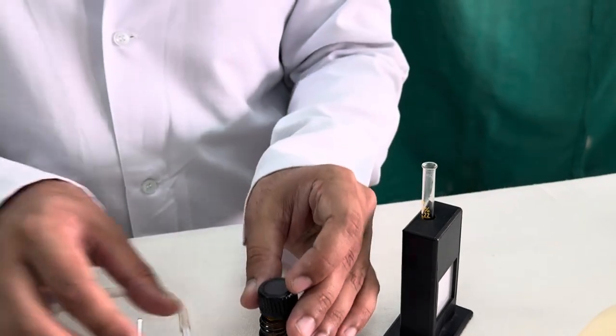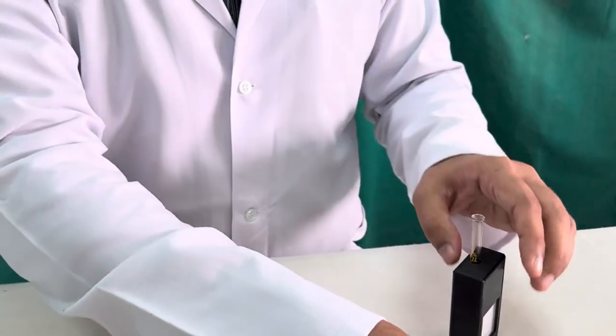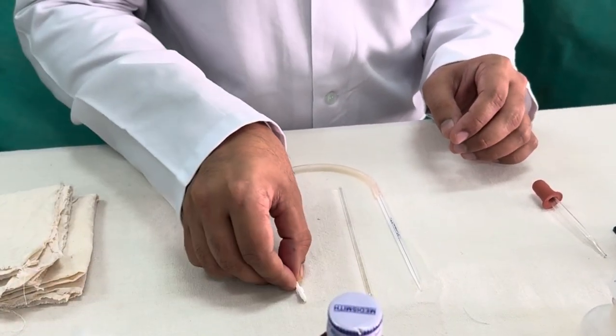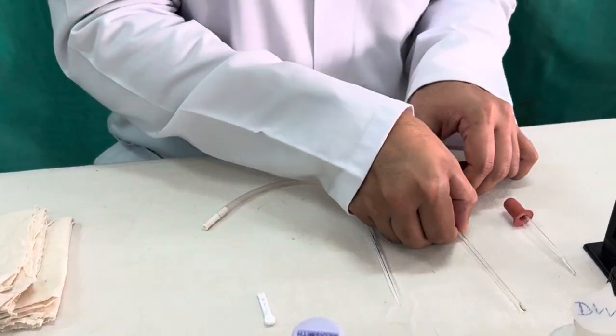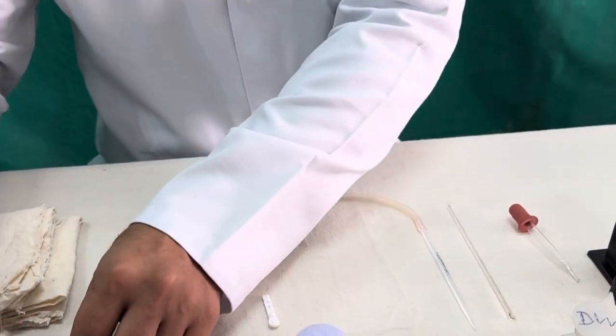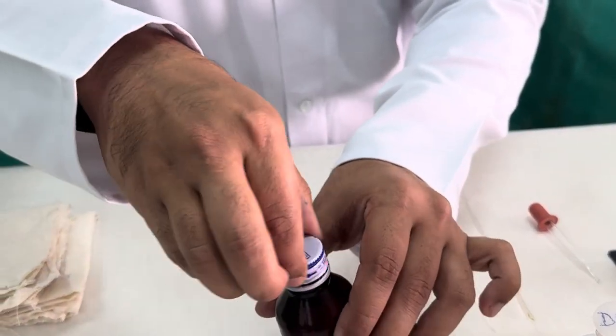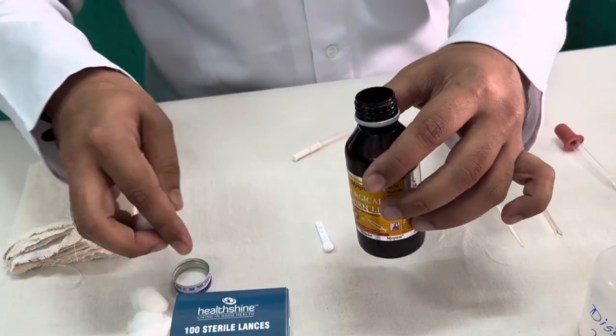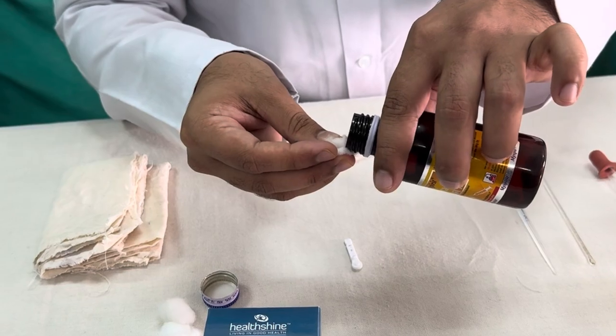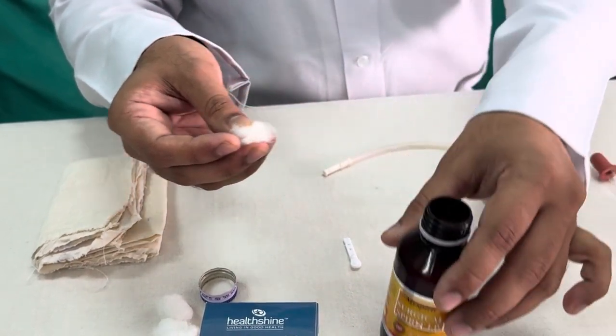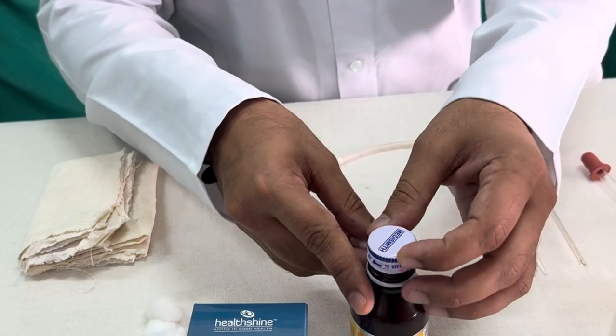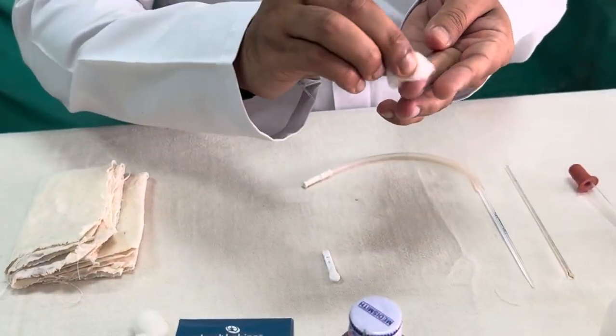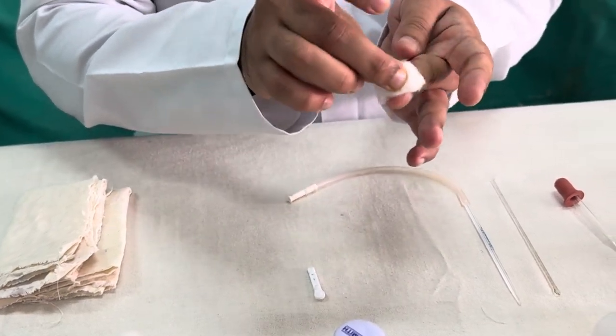Now once we have placed that, now with aseptic precautions we will prick the finger, preferably ring finger or the middle finger, with aseptic precautions. For that you should use a cotton swab or gauze piece and just pour a small amount of the spirit and wipe it out on the fingertip and allow it to dry.